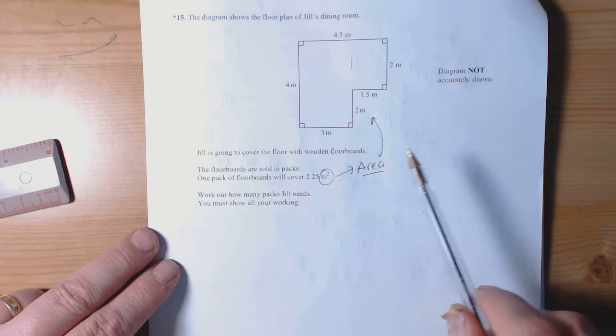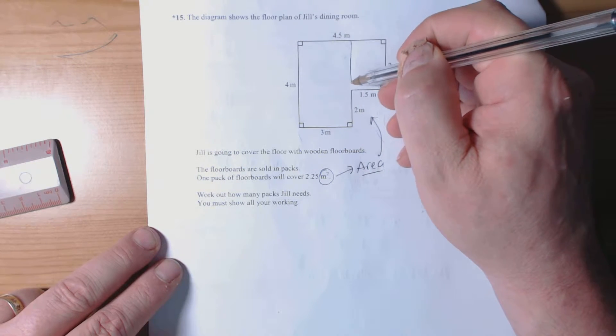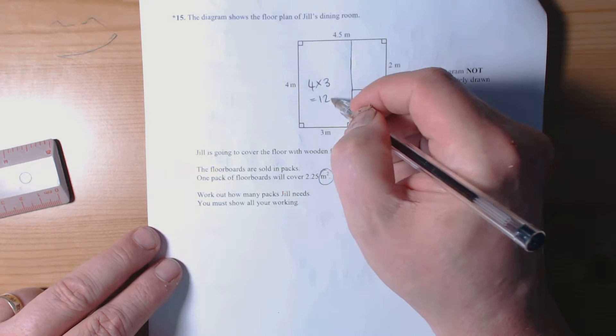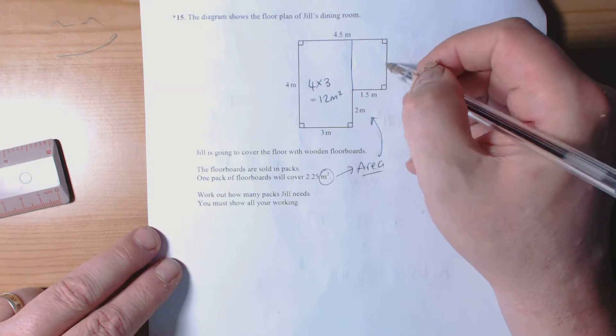Okay, so compound shape, usual way. The area of this bit here is a rectangle, so length times width. That's got an area of 12 square meters. Again length times width, so 2 times 1.5 equals 3 square meters.